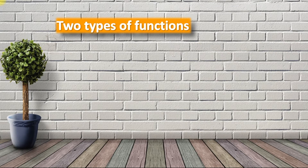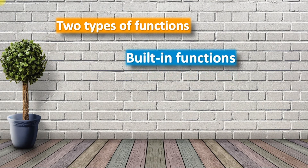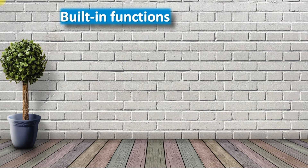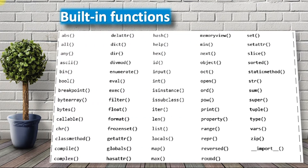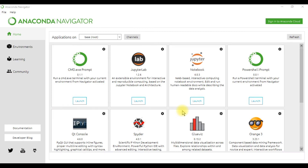Now coming to the types of functions in Python — mainly two types are available: one is built-in functions, and the second is user-defined functions. These are the list of built-in functions — there are many built-in functions. I am giving one example now. This is the Anaconda Navigator, already explained how to install in a previous video — please check that video, the link is given in the description.